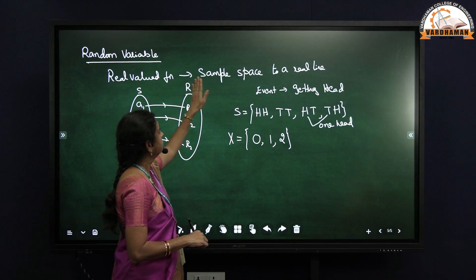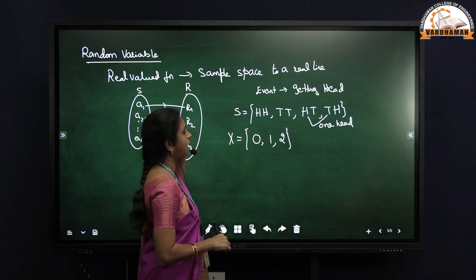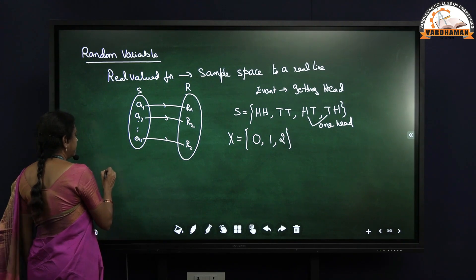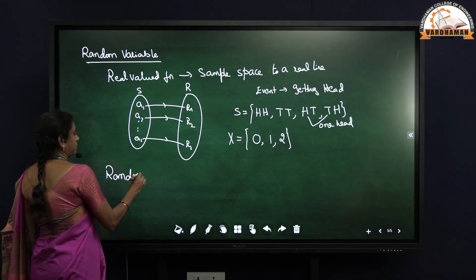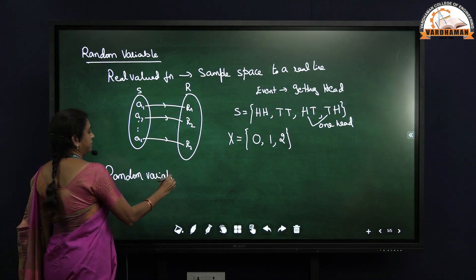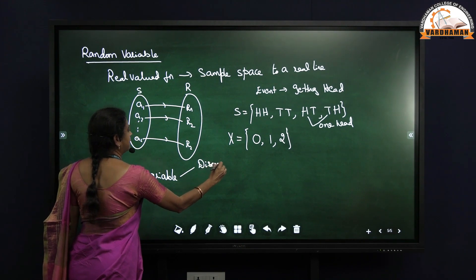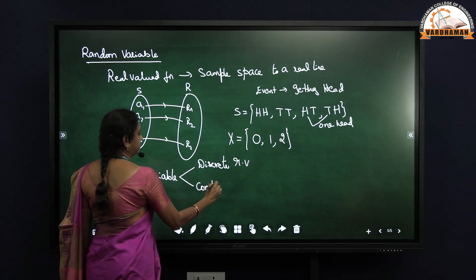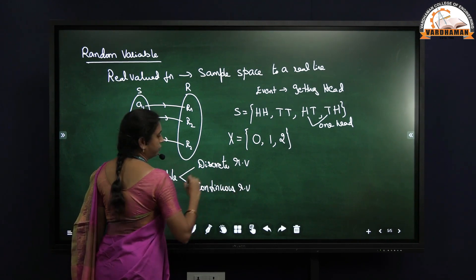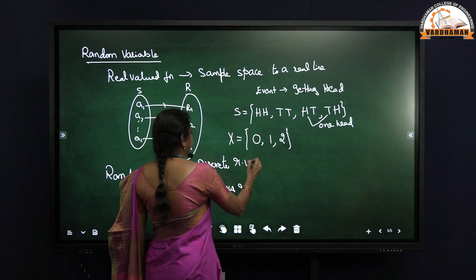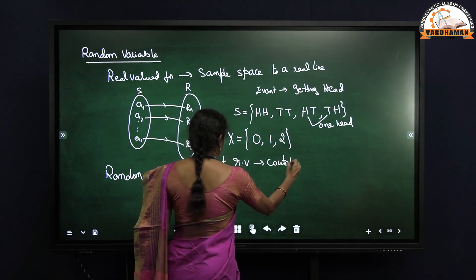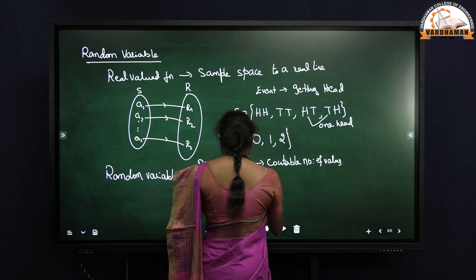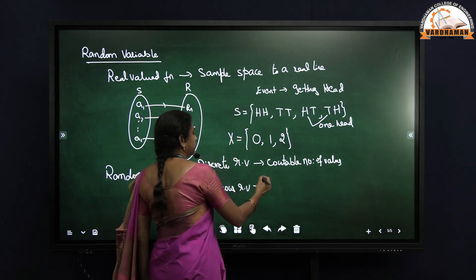So a real valued function which maps sample space to a real line is known as a random variable. Now we will discuss about discrete probability distribution. This random variable is of two types: one is discrete random variable and another is continuous random variable. The discrete random variable takes a countable number of values.